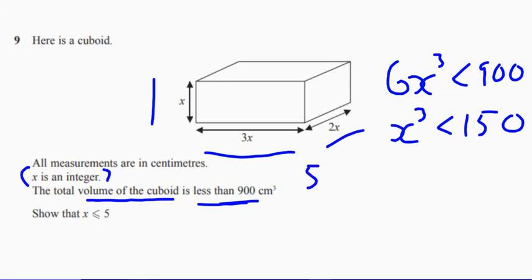I know that 5 cubed is 125. And I also know that 6 cubed, 6 multiplied by 6 multiplied by 6, will give me 216.